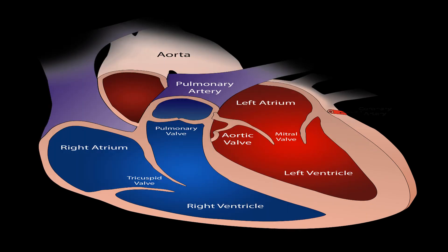Pulmonary Arterial Hypertension Risk Factors. Understanding Pulmonary Arterial Hypertension. Pulmonary Arterial Hypertension occurs when the arteries in the lungs have elevated blood pressure, and the right side of the heart has to work harder to pump blood to the lungs.